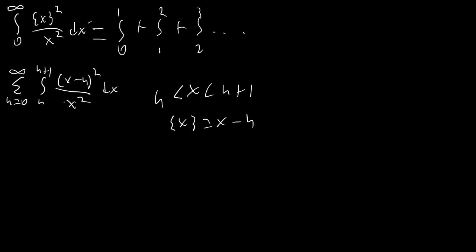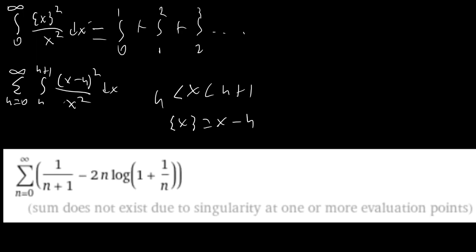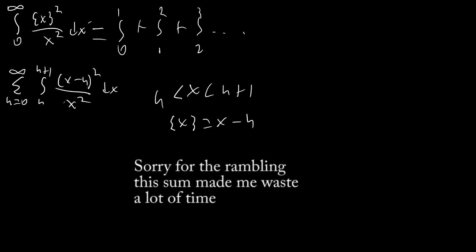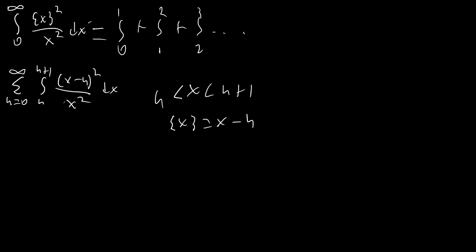Usually at this point I would expand (x − n)², divide, integrate, and then sum up the power series term by term. However, in this situation that's not going to work — you end up with a really nasty infinite sum that's intractable, and even Wolfram Alpha says it diverges, which we know isn't true. The problem is the first terms are adding and subtracting infinity, and the terms don't go to zero as they get large, so Wolfram can't handle it.